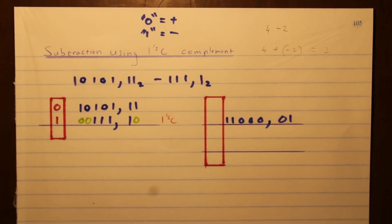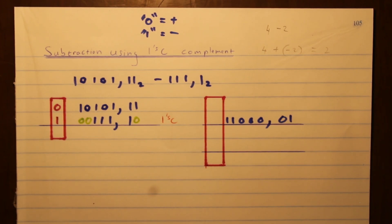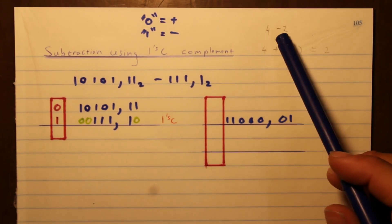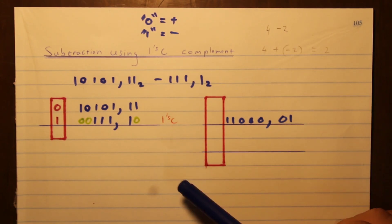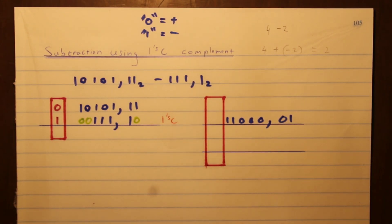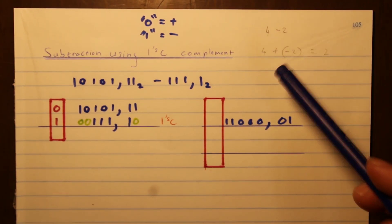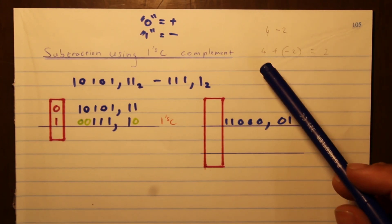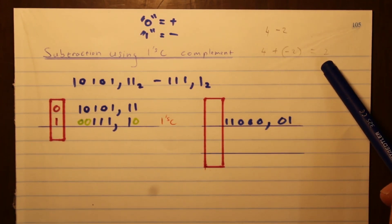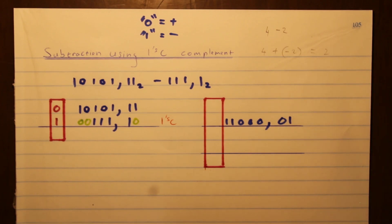Now we're going to be looking at one's complement. What that is is subtraction for the computer but using addition. So we're going to be subtracting two numbers but using addition to do that. Think of it like this: if you had four minus two in decimal and wanted to subtract using addition, if you inverted the positive two to a negative two, you would say four plus negative two gives you two.